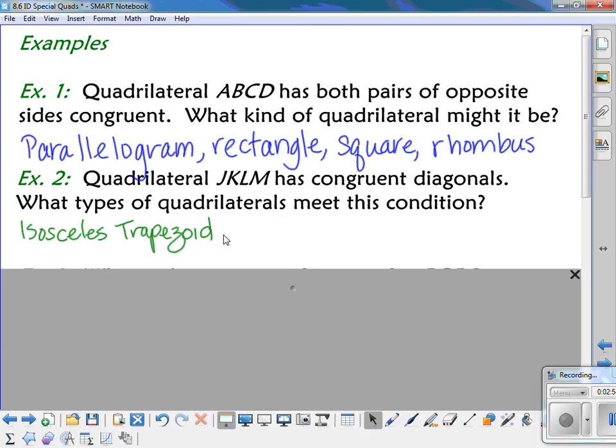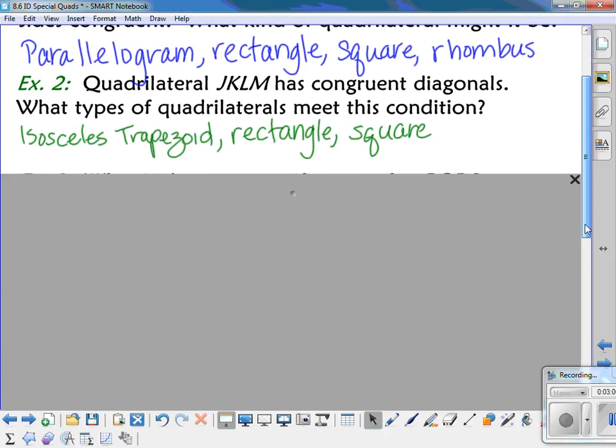but rectangles, a special parallelogram, have congruent diagonals. So it could be a rectangle, and it could be a square. All right, looking at the next example.